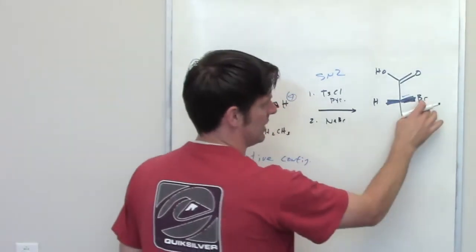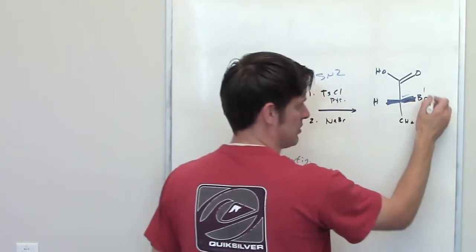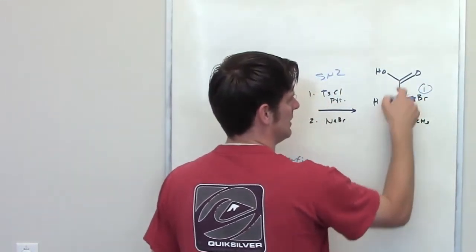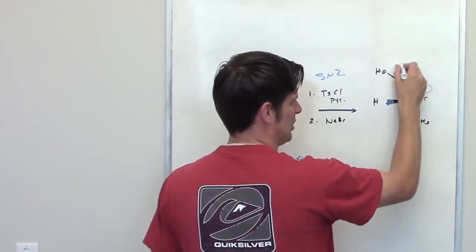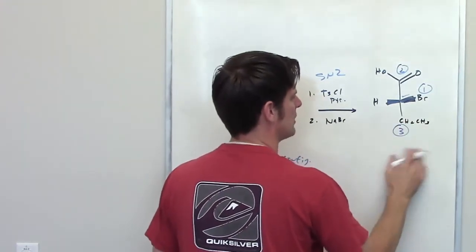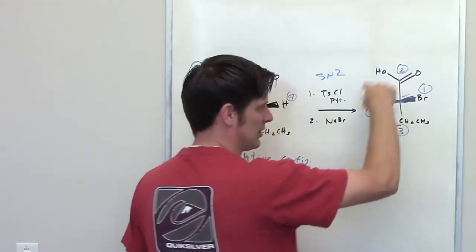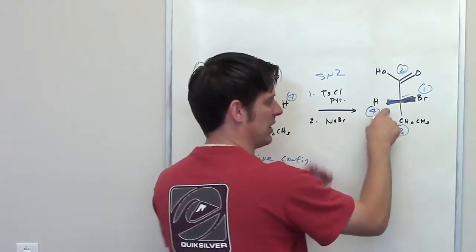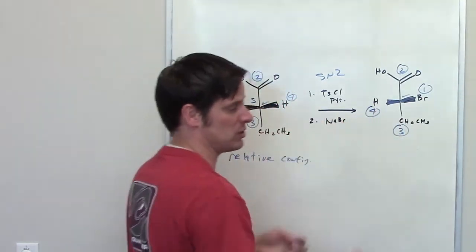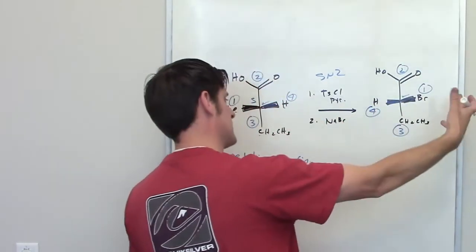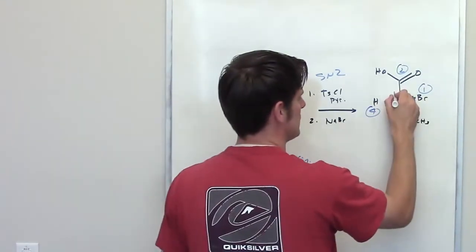Now I'll do the same thing over here. Bromine's the highest priority group. I've got carbon-carbon. This carbon group up here is number two. This carbon group down here is number three. And this hydrogen is number four. One to two to three looks counterclockwise. However, the lowest priority group is pointing towards us, which means that it's actually clockwise if I were on the opposite side of the molecule staring at it, which means that this molecule is R.